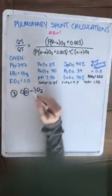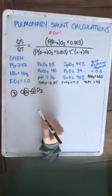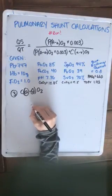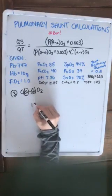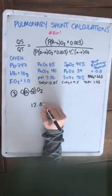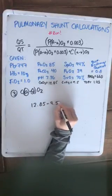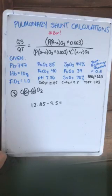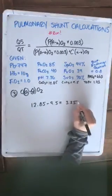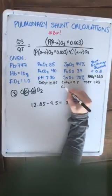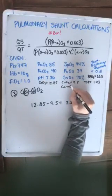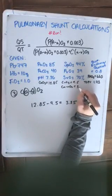Okay, we're still on step 3. We just calculated our CVO2, and now we're just going to subtract them from one another to get the difference. 12.85 minus 9.5 is 3.35. So I'll write that up here: C minus VO2, 3.35.